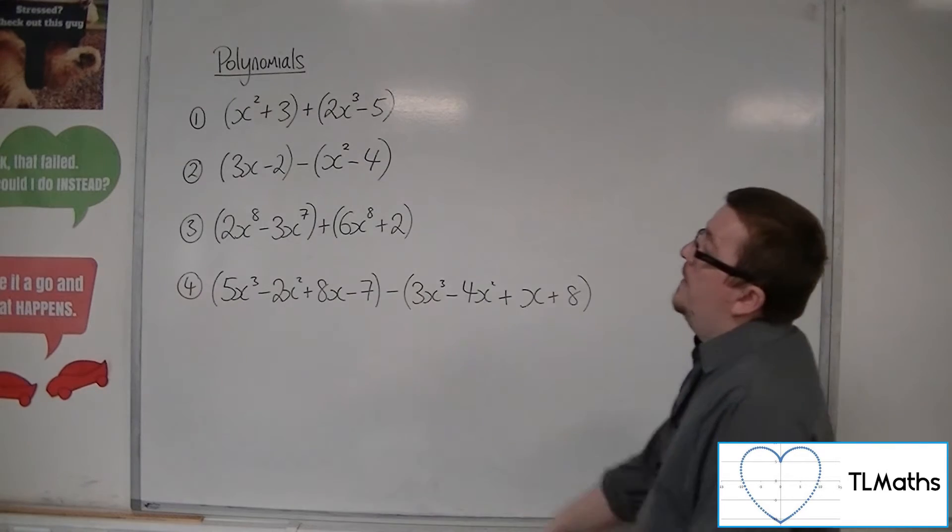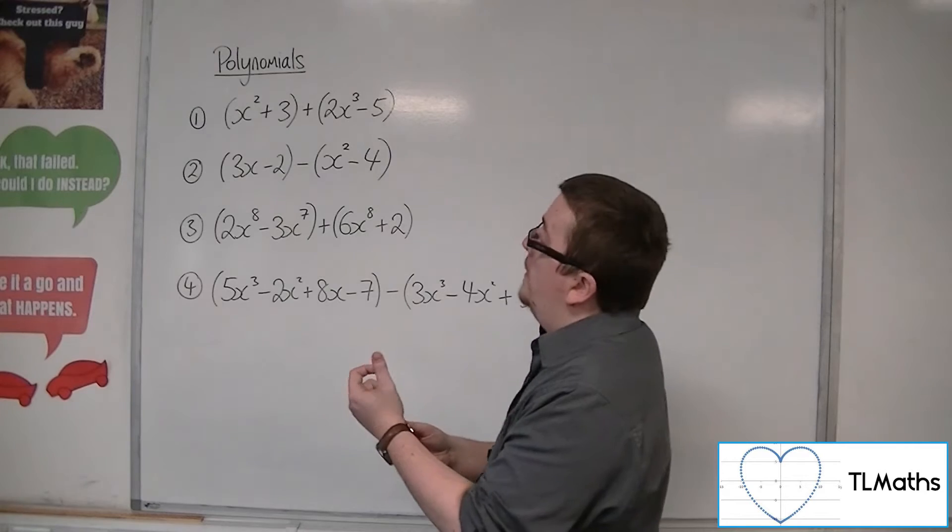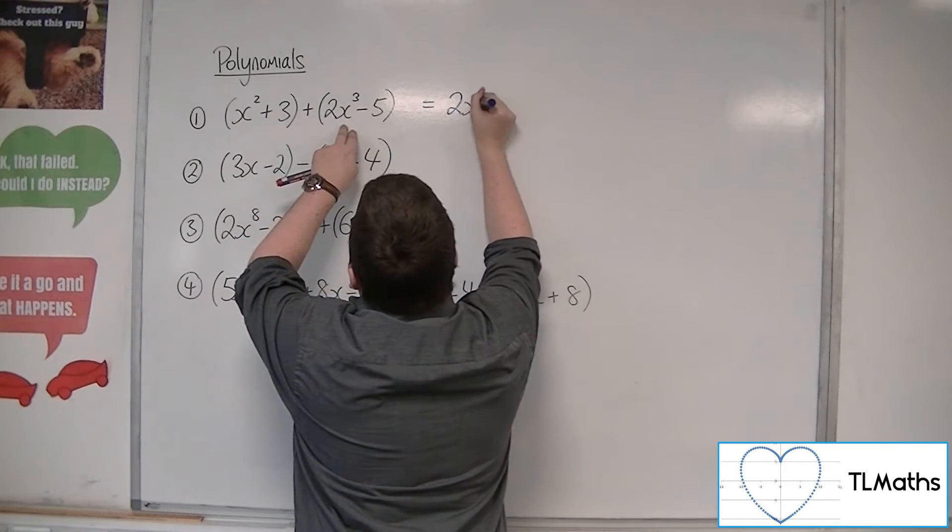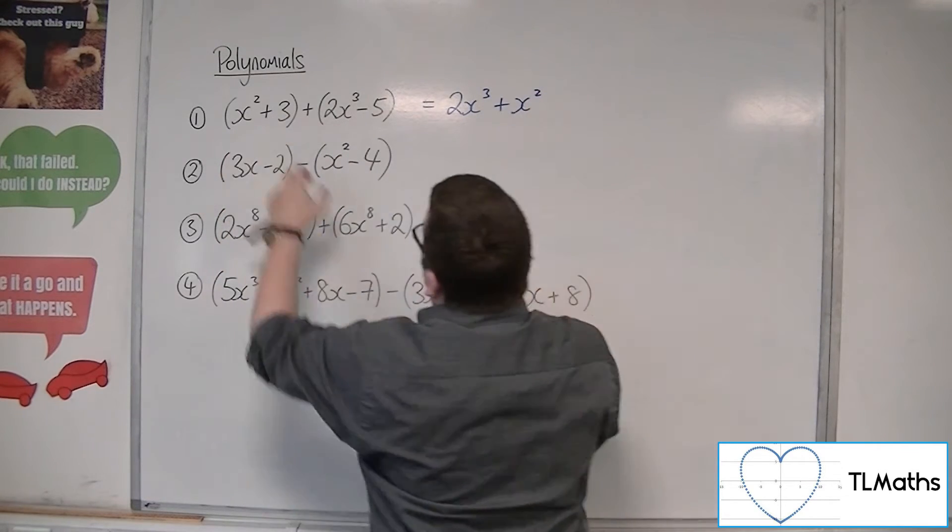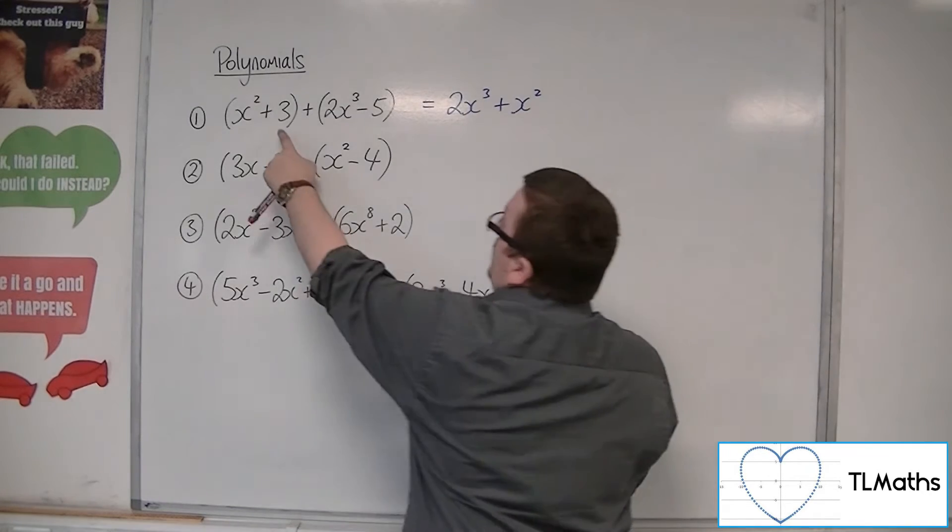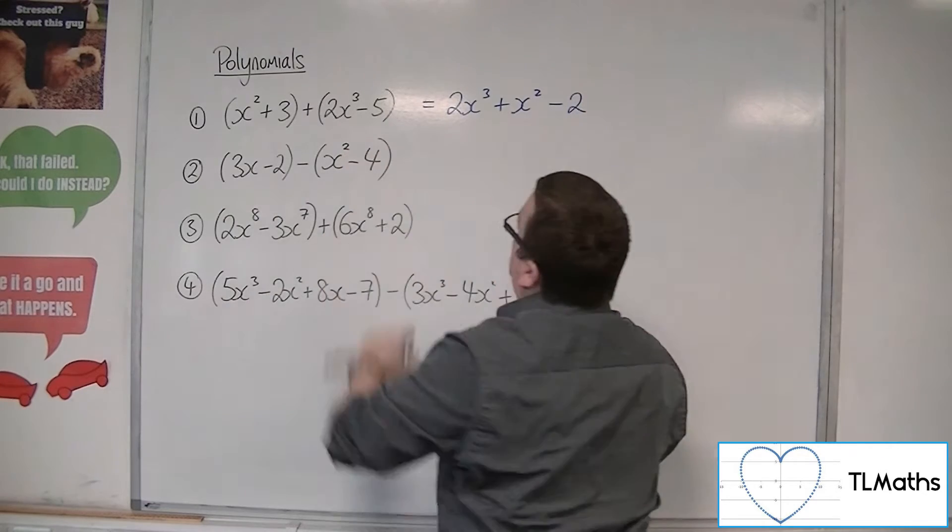So if I have x squared plus 3 plus 2x cubed minus 5, then I've got the 2x cubed. I can't combine that with the x squared. They are two different entities, two different terms. But the 3 and the minus 5, they can combine and make the minus 2.